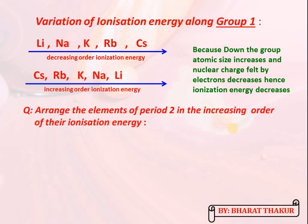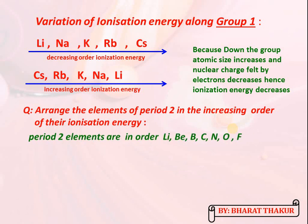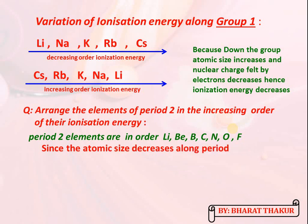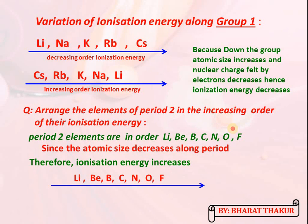Practice question: arrange the elements of period 2 in increasing order of their ionization energies. The elements of period 2 in proper order are: lithium, beryllium, boron, carbon, nitrogen, oxygen, and fluorine. Since atomic size decreases and nuclear charge increases along the period, ionization energy increases from left to right, so we place an arrow indicating the increasing trend.